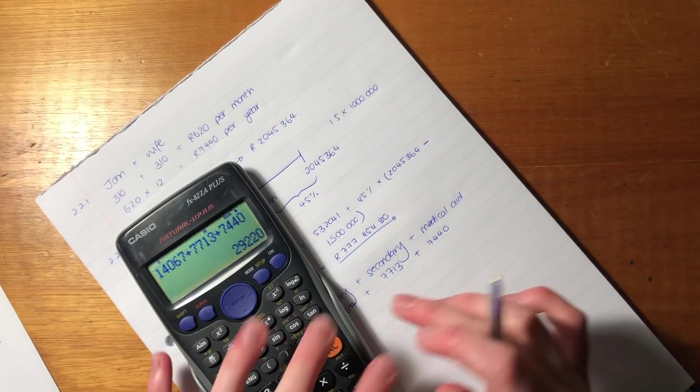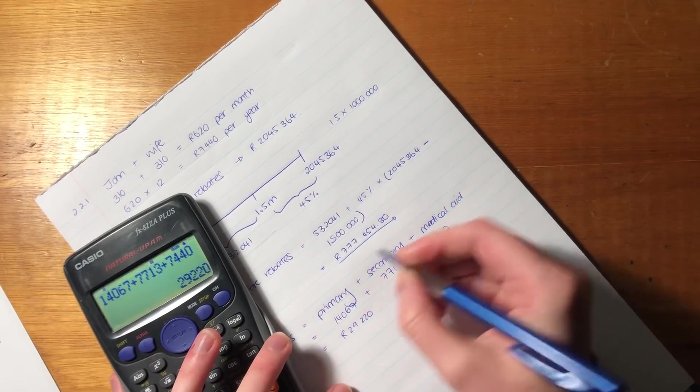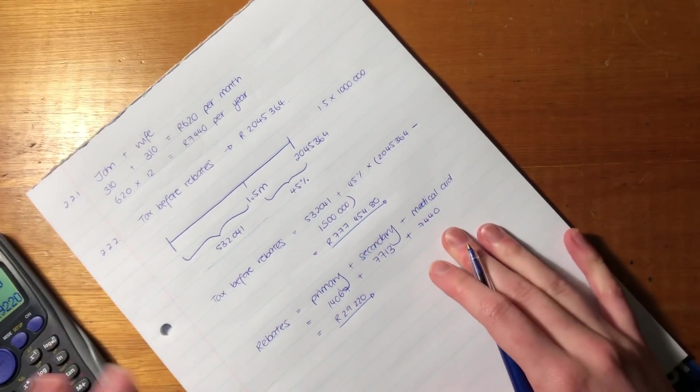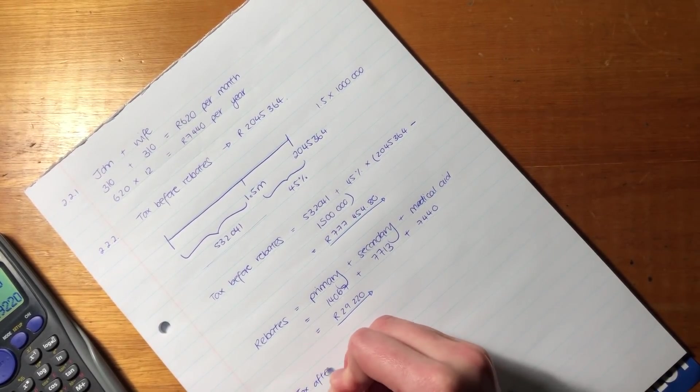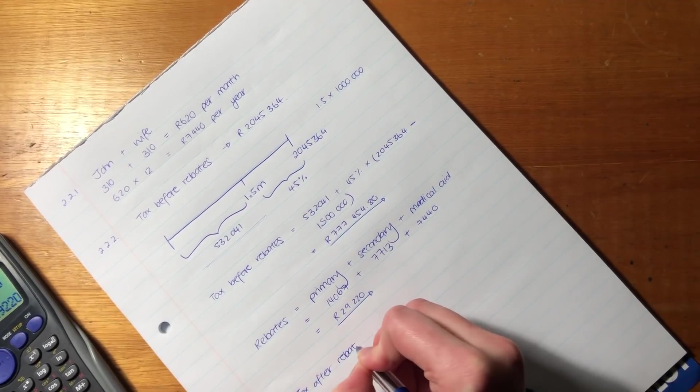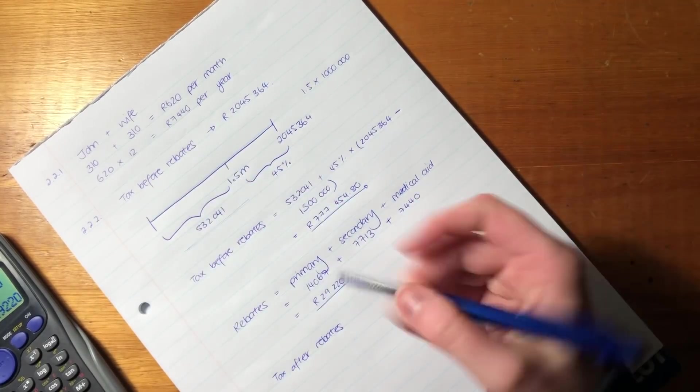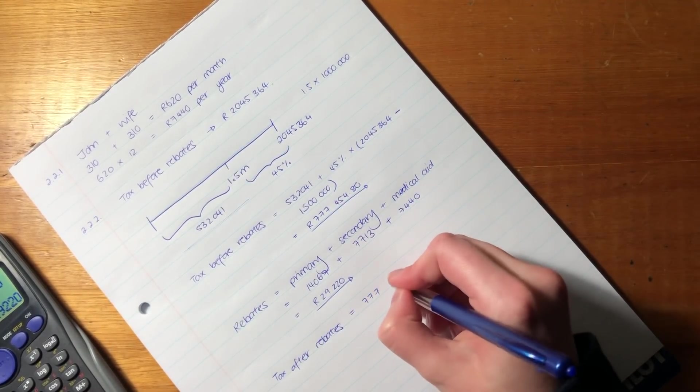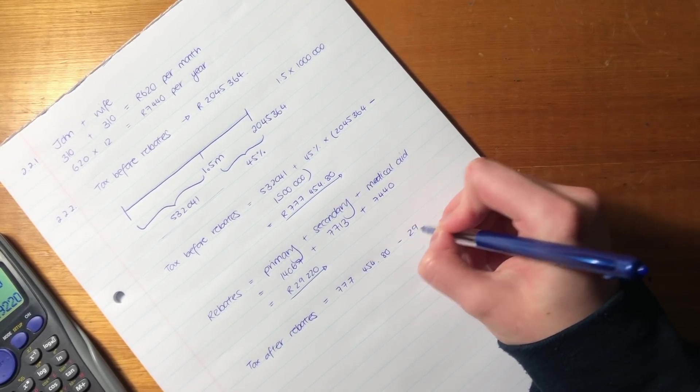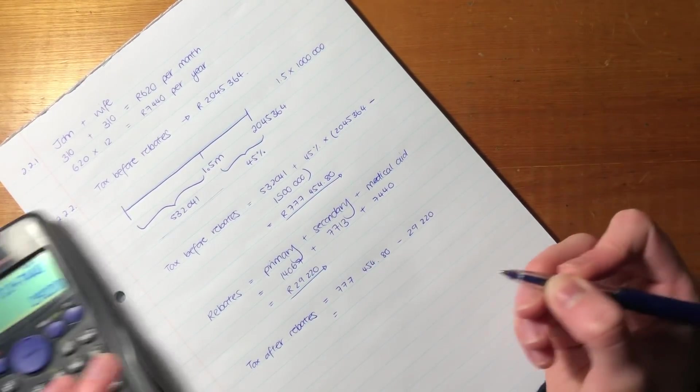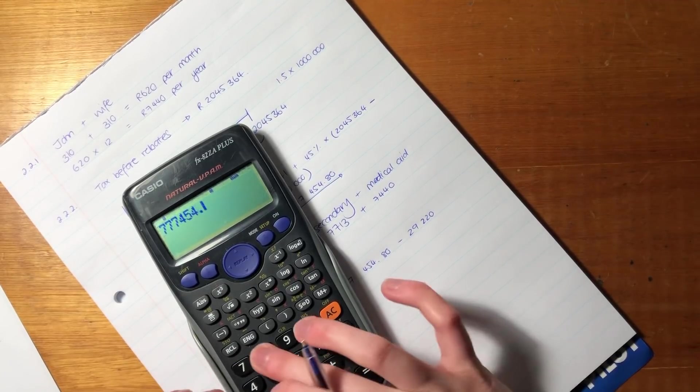Make sure that you do not have any typos. Remember also here, we must always put our rand signs in, because it's referring to money. It's not just numbers. It's referring to money. So tax after rebates, which is what they actually want to know. They want to know how much money goes from John to SARS. Okay. So it's 777,454.80 minus the 29,220. Okay. So all we have to do now is plug that into our calculator.